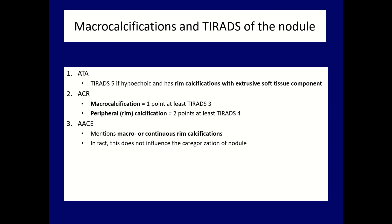Microcalcifications are mentioned in the three American thyroid TIRADS systems. The ETA states that if we see a rim calcification with extrusive soft tissue component, this is a very suspicious sign. Nevertheless, it is a very rare finding — a typical form is found in less than 1 in 1,000 thyroid nodules. So the importance of such a finding is much less than, for example, the finding of a microcalcification.